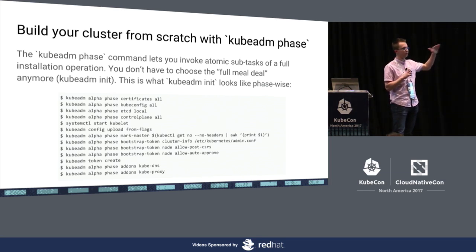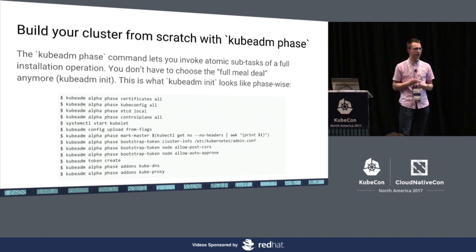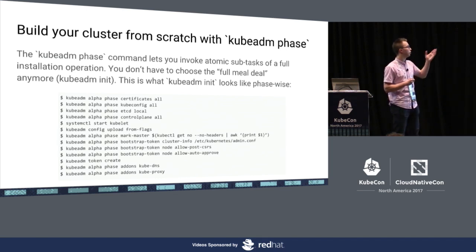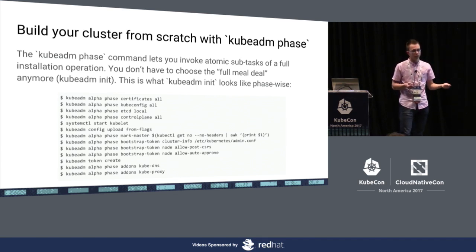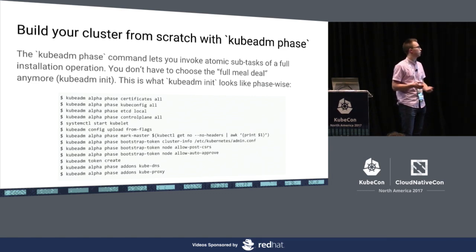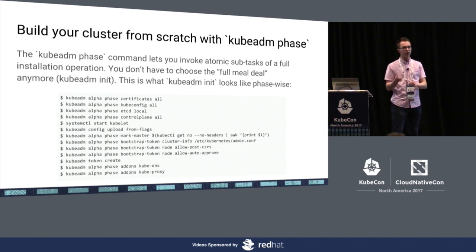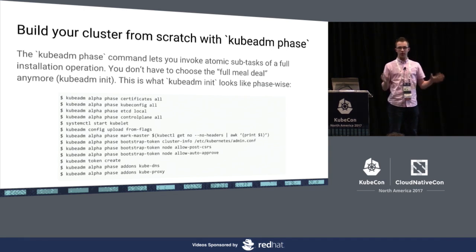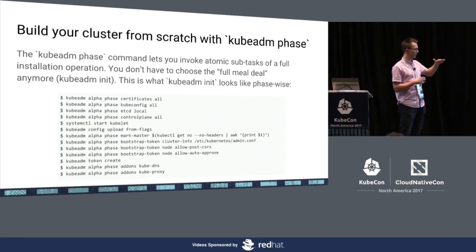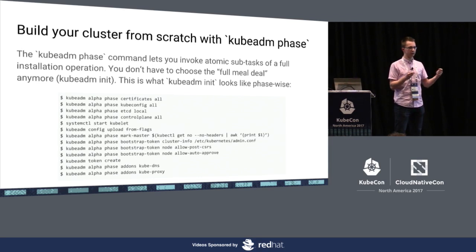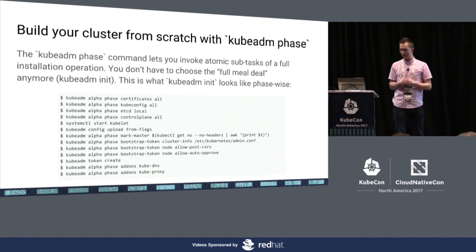If you don't want to do all these things at once, you can run these phases — these atomic sub-steps of cluster creation — separately. You can generate the kubeconfigs, certificates, the control plane static pod manifests, etc. individually. Or if you have a good replacement for, say, the bootstrap token, you can skip that step and copy credentials from the master to the node instead.